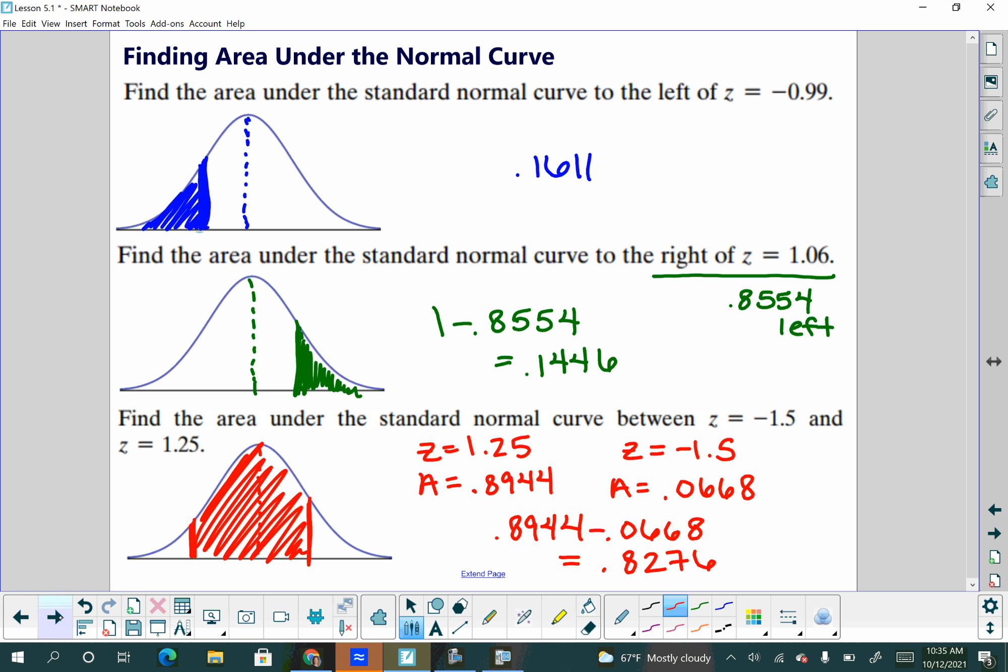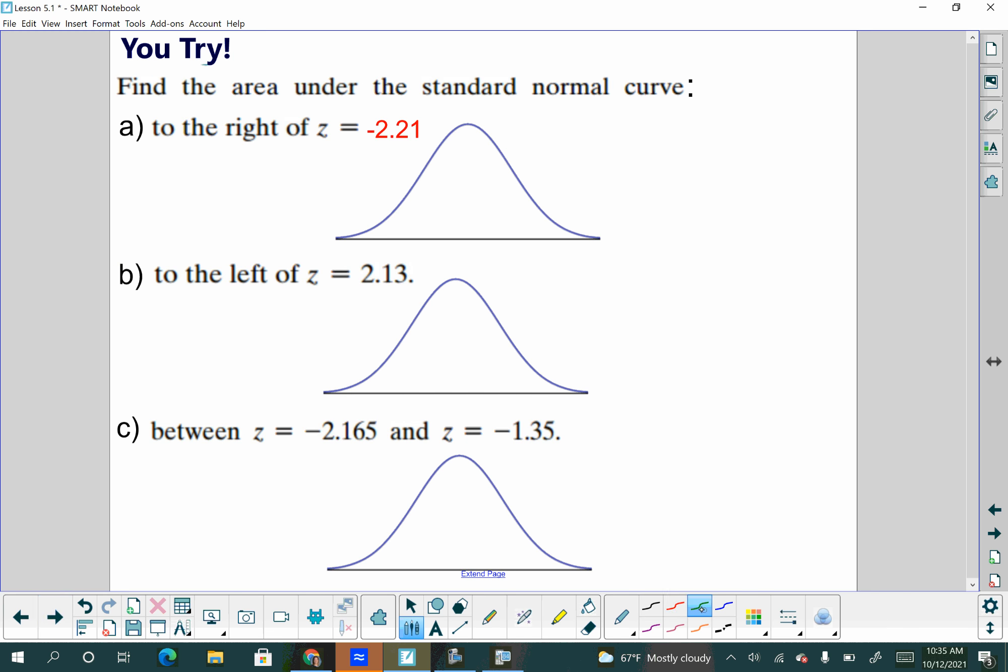The last three today are for you guys to try. I want you to change part A to negative 2.21 because we already did 1.06. So change part A to negative 2.21. I want a sketch of the area that you are calculating under the normal curve. And then I want you to calculate the right, the left, and the area in between, respectively, on each of these. And I'm going to have you guys come up to the board and put these answers up in a minute. So give a couple minutes, work together, use your table or your calculator. Tables probably a little bit faster to find the areas for these z-scores that you're looking for.